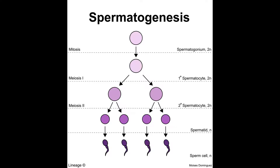We can only give 2 reproductive cycles in our sperm — but that is not the case. We produce millions of sperm. So spermatogonium will multiply by mitosis — divide, divide, divide — through the process of mitosis.